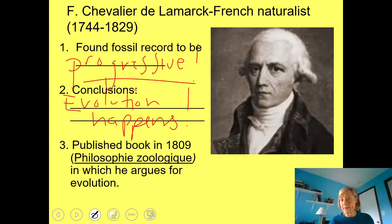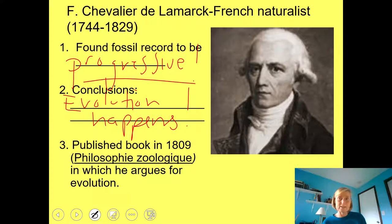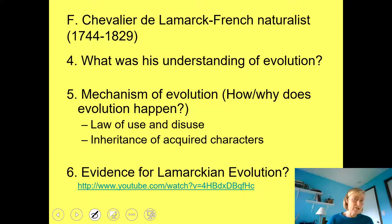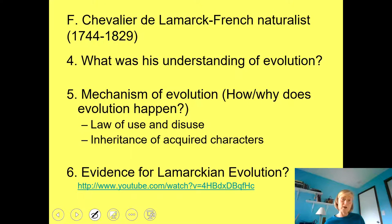He published a book in 1809 — the year Darwin was actually born — in which he publicly argued for evolution. He was likely the first person to publicly argue for evolution. His understanding was that adaptive change happens in lineages, and that adaptive change is ultimately driven by environmental change over long periods of time.